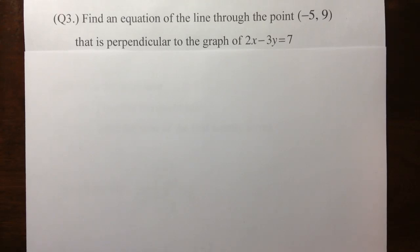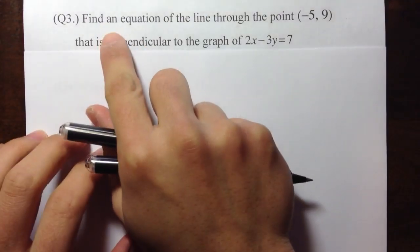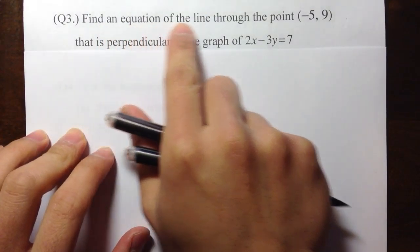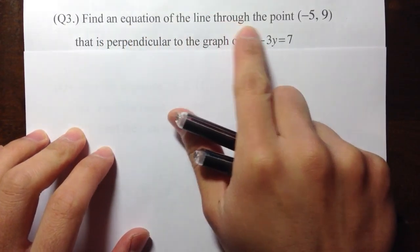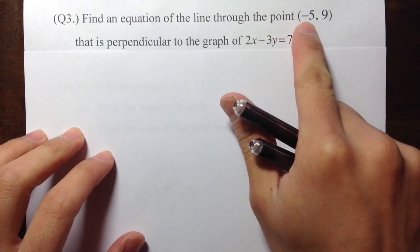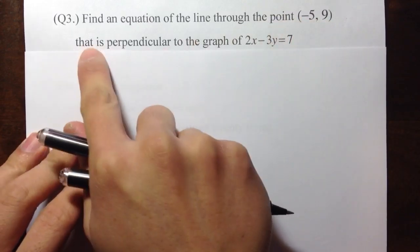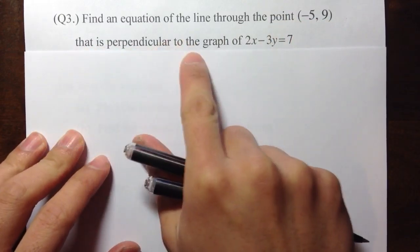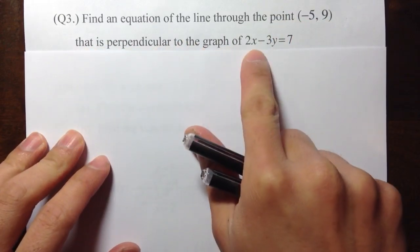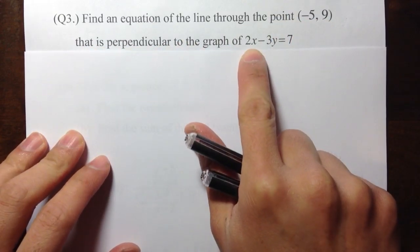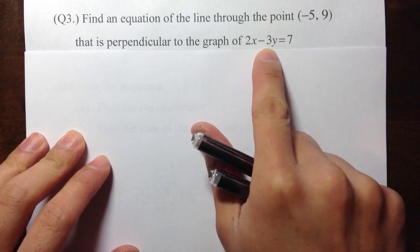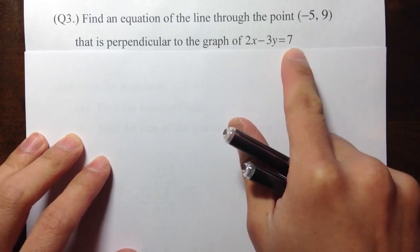For equation number 3, we are going to find an equation of a line that goes through the point negative 5, 9, and that's perpendicular to the graph of the line 2x minus 3y is equal to 7.